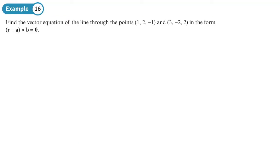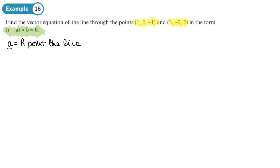Example: find the vector equation of a line through the points (1, 2, −1) and (3, −2, 2), writing it in the form (r minus a) cross b equals zero. A is any point the line passes through, so I'm going to use (1, 2, −1).